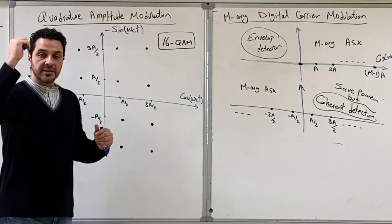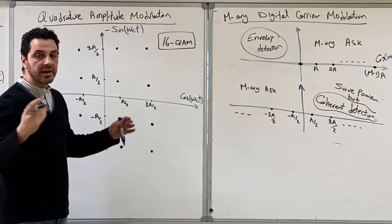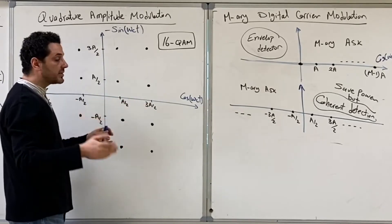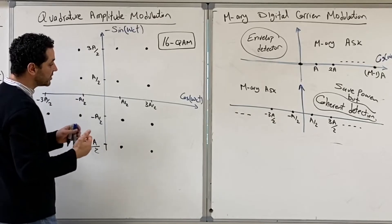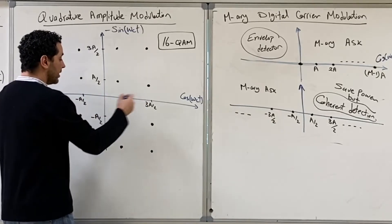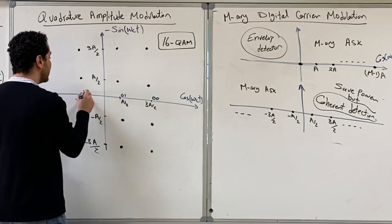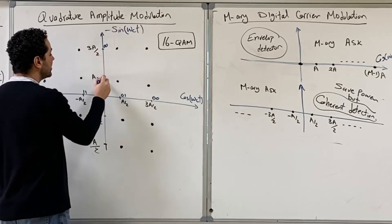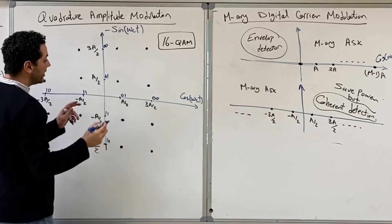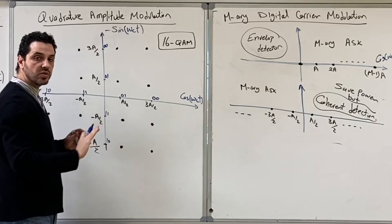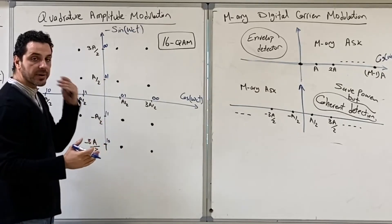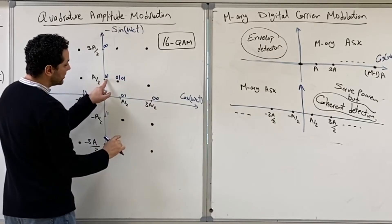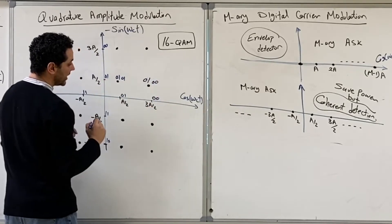Since we have 16 different constellation points, each point can carry up to 4 bits. We can distribute the bits using any coding scheme, for example Gray coding. One approach: let the cosine carry 2 bits and the sine carry 2 bits. For example, the 4 cosine amplitudes can be assigned 00, 01, 11, 10, and similarly for the sine amplitudes. The 2 bits from cosine represent the least significant 2 bits, and the 2 bits from sine represent the upper 2 bits. For instance, one constellation point would be represented as 01 from sine and 00 from cosine, giving 0100.